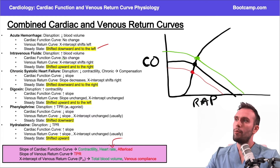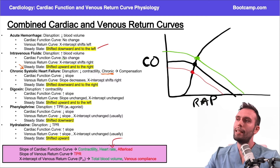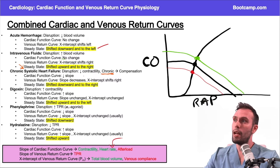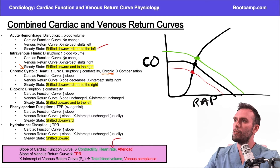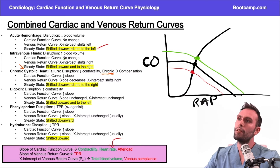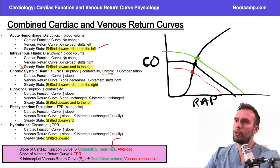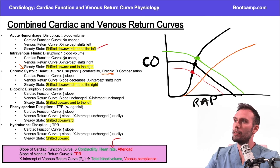Chronic systolic heart failure — the number one disruption is decreased contractility. When they say chronic, you're forced to weigh in long-term compensatory factors like afterload and total blood volume. But always start with the primary disruption: decreased contractility primarily affects the cardiac function curve, and since it's proportional, a decrease in contractility flattens the cardiac function curve.